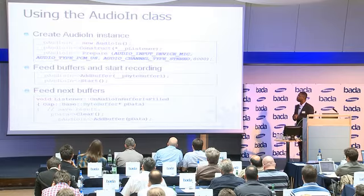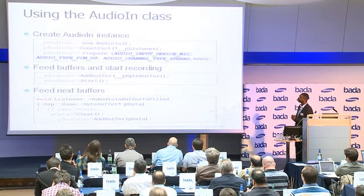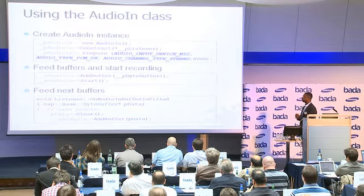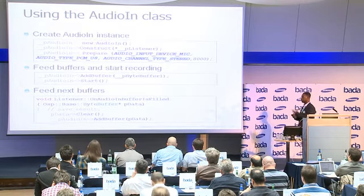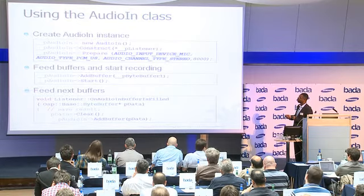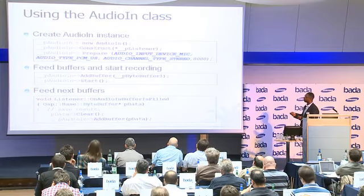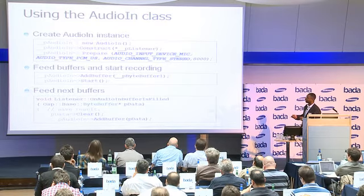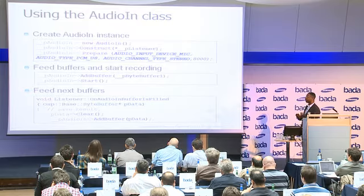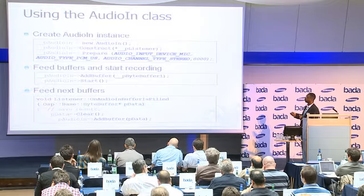So we have an example here of how we can do this. We create an AudioWin instance, construct with the listener, and there's also an additional construction process whereby we call the prepare method, where we specify the device from which we're going to be recording — in this case the mic. We specify the size of the samples, here it's unsigned 8-bit PCM, we state that we want to record two channels of audio, and we also specify the sample rate.